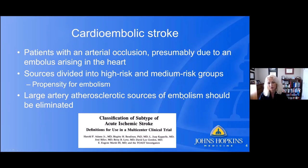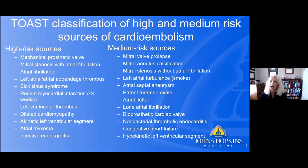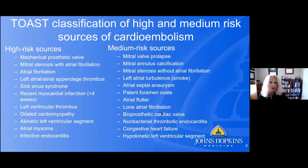Large artery atherosclerotic sources of embolism should be eliminated — that's important within the TOAST classification. High-risk sources of cardiac clot include atrial fibrillation, mechanical prosthetic valves, recent myocardial infarction, and left ventricular thrombus. Infective endocarditis also carries a high risk of emboli, but that clot is infective and different from clots arising from atrial fibrillation — treating those patients with anticoagulation can be detrimental.